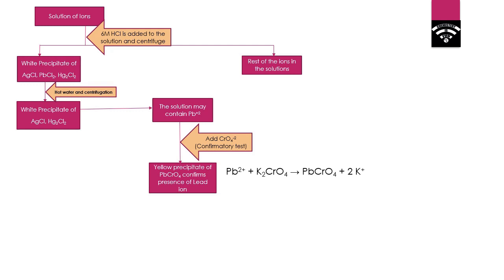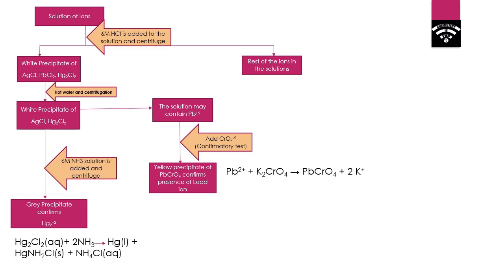In the white precipitate, we are going to add 6 molar ammonia solution. If AgCl is present in the white precipitate, it will dissolve in the 6 molar ammonia solution.